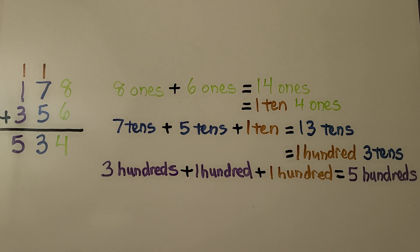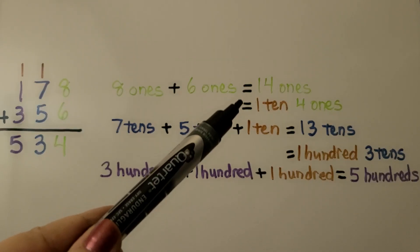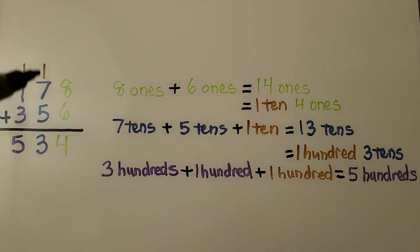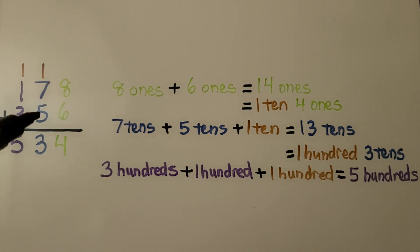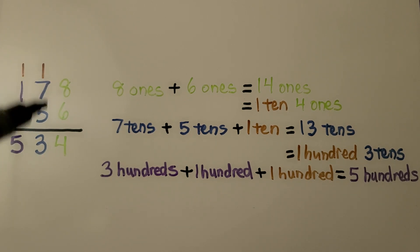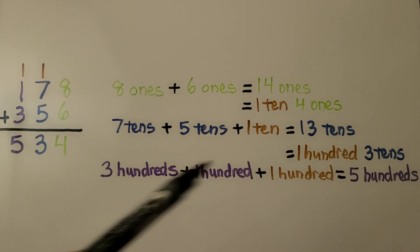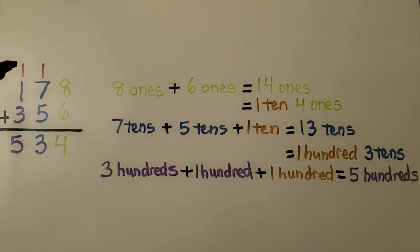So this is what we did when we added one hundred seventy-eight plus three hundred fifty-six. We added the ones: eight ones and six ones is fourteen ones. We regrouped a ten and wrote the four — it's one ten, four ones. Then we did the tens: seven tens plus five tens plus the one ten we regrouped is thirteen tens. Thirteen tens is one hundred with three tens. We regrouped that one hundred to the hundreds place. Then we added the three hundred, the one hundred, and the one hundred to get five hundreds.